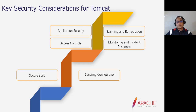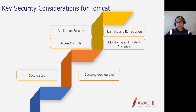Regular vulnerability scanning of the entire web application infrastructure — including the underlying OS, web server, and database — is crucial to identify potential weaknesses. Any detected vulnerabilities should be promptly remediated to reduce the attack surface. Robust access controls limit user permissions based on roles and responsibilities, and the principle of least privilege should be followed. Continuous monitoring of Tomcat server logs and web application security helps detect unusual behavior, and an effective incident response plan specific to Tomcat enables rapid identification, containment, and resolution of security incidents.